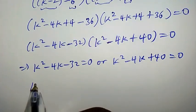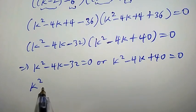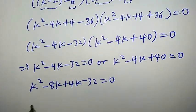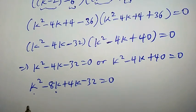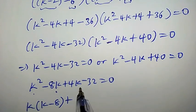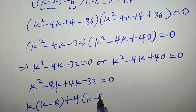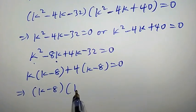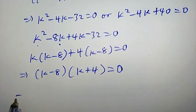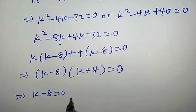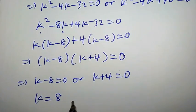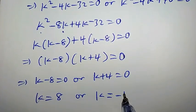Let's focus on the first equation: k squared minus 4k minus 32 equal to 0. We can write minus 4k as minus 8k plus 4k. The common factor in the first two terms is k, so pulling it out gives k times k minus 8. From the last two terms we can pull out 4, giving 4 times k minus 8, equal to 0. This implies k minus 8 times k plus 4 equals 0.